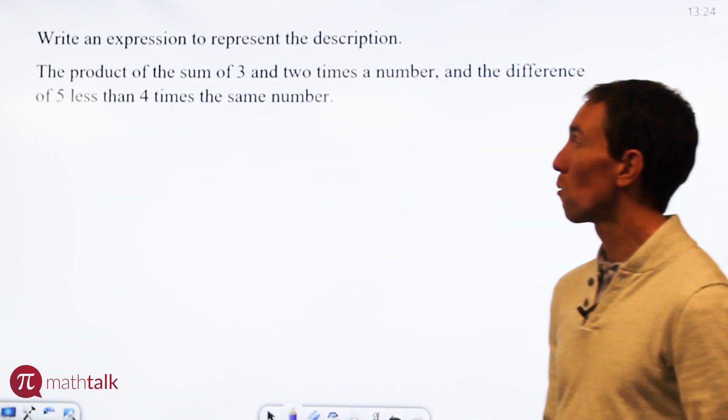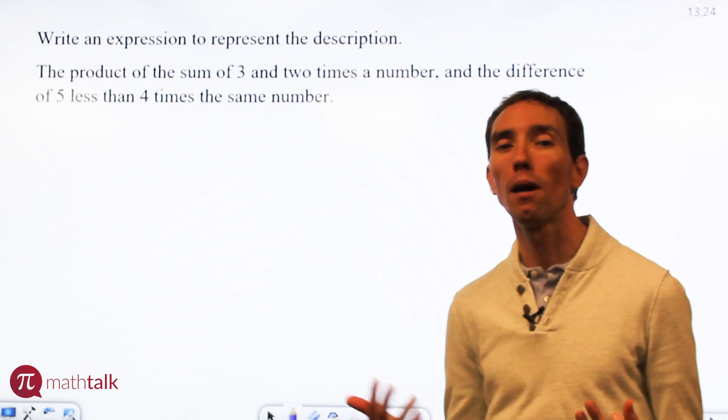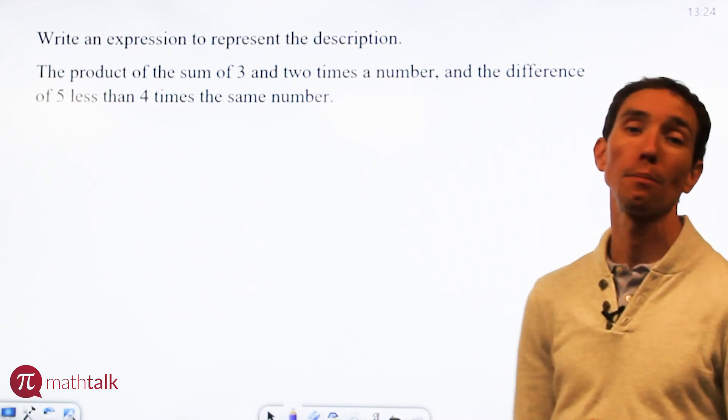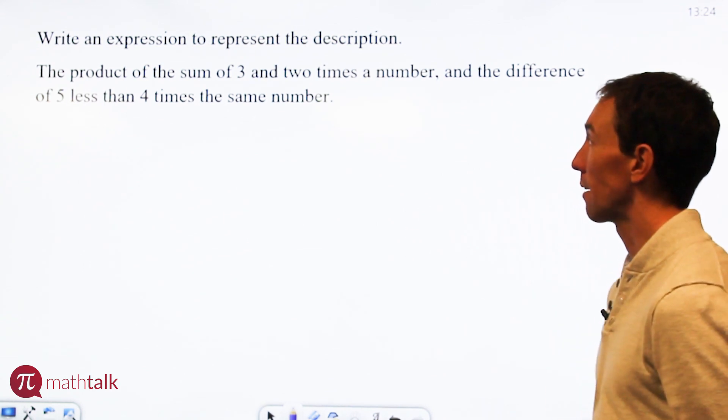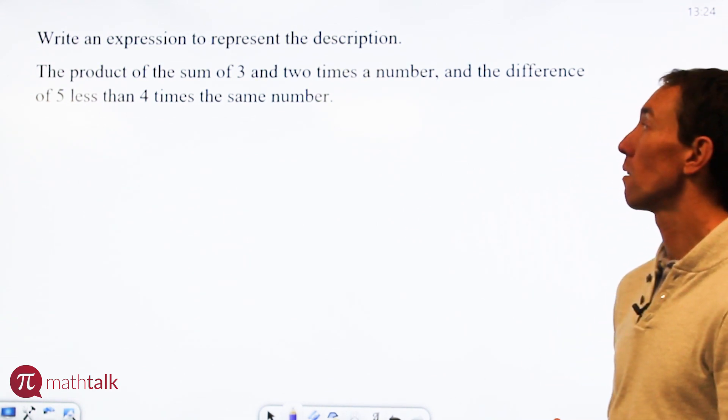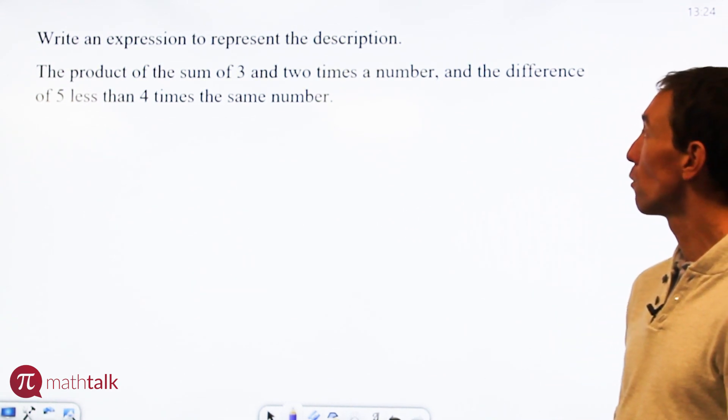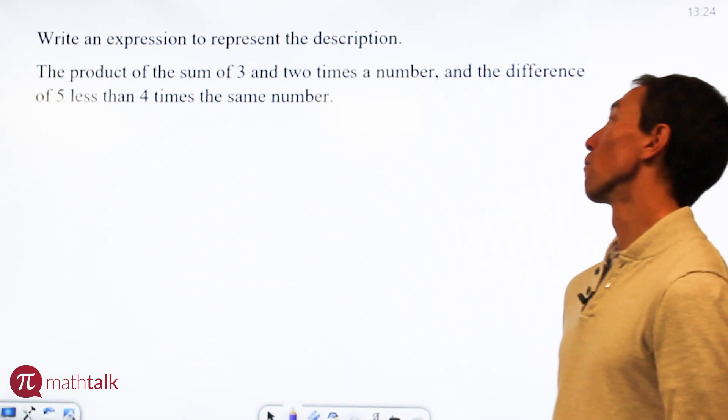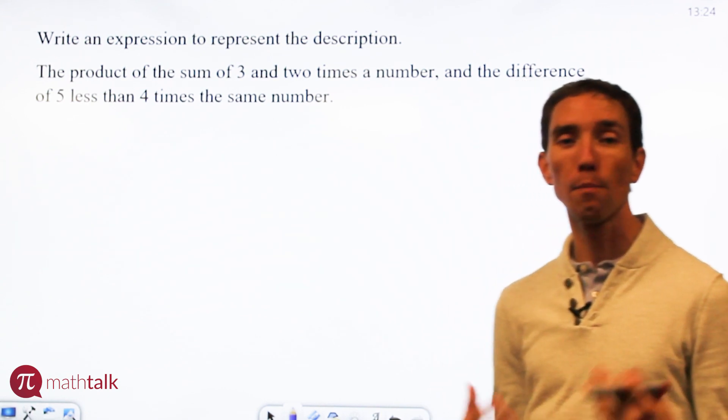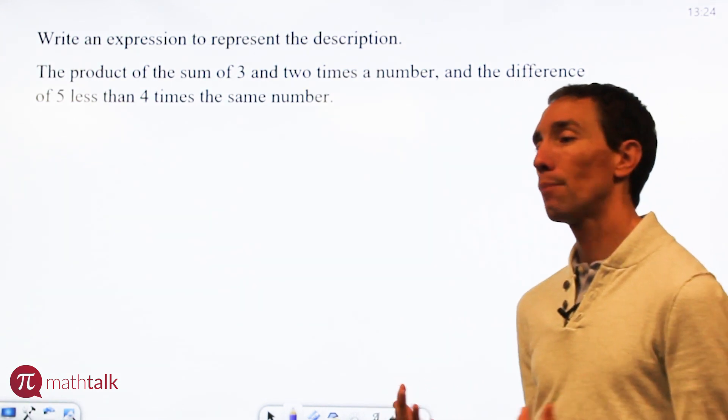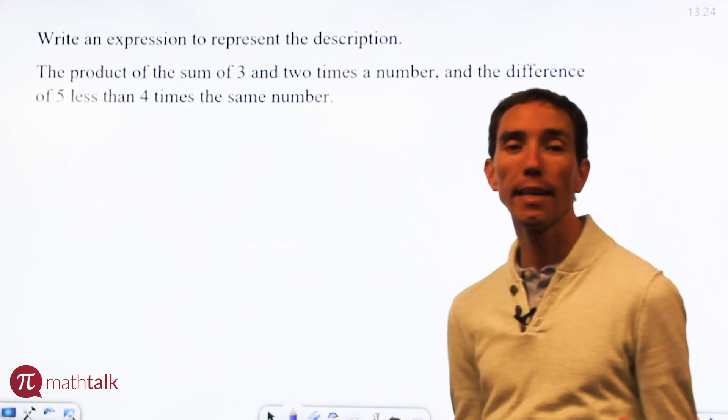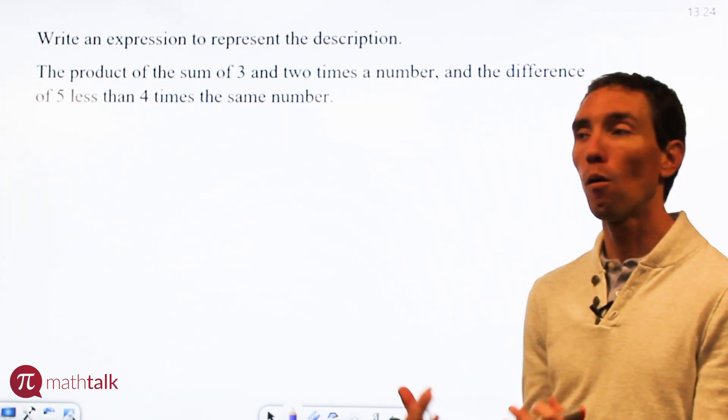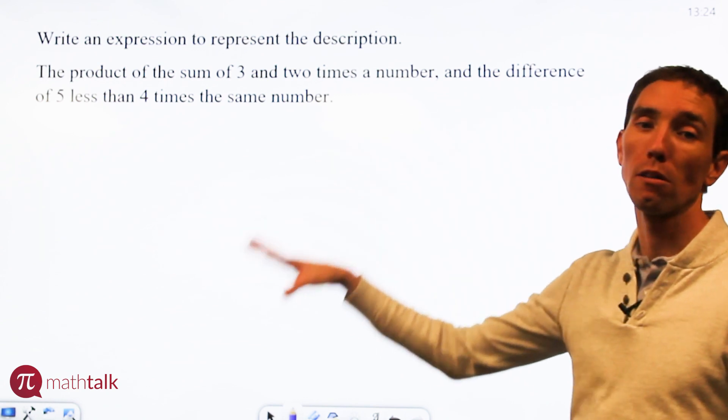Okay, so I have a question or a small kind of word problem that says write an expression to represent the description. The description says the product of the sum of three and two times a number and the difference of five less than four times the same number. Whoa, that's a lot. So let's break it down and figure out how to put this together. When they say write an expression, they really want you to write in numbers and letters what is represented by all the words that are here.